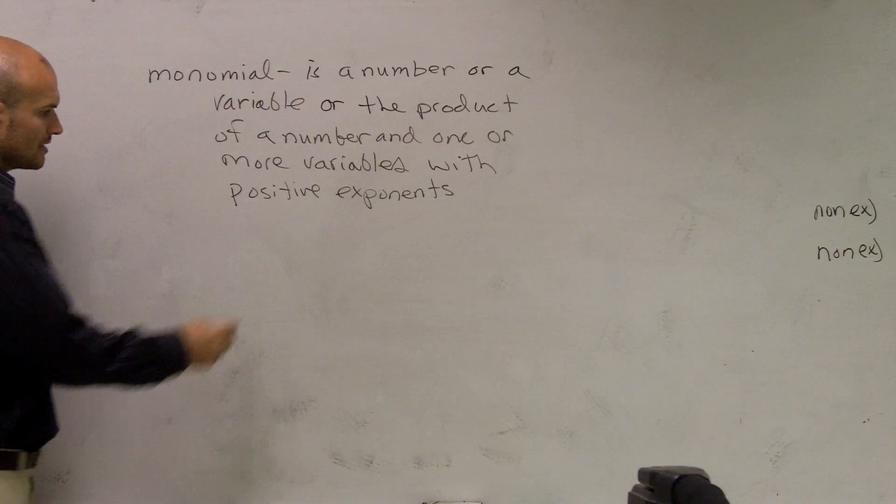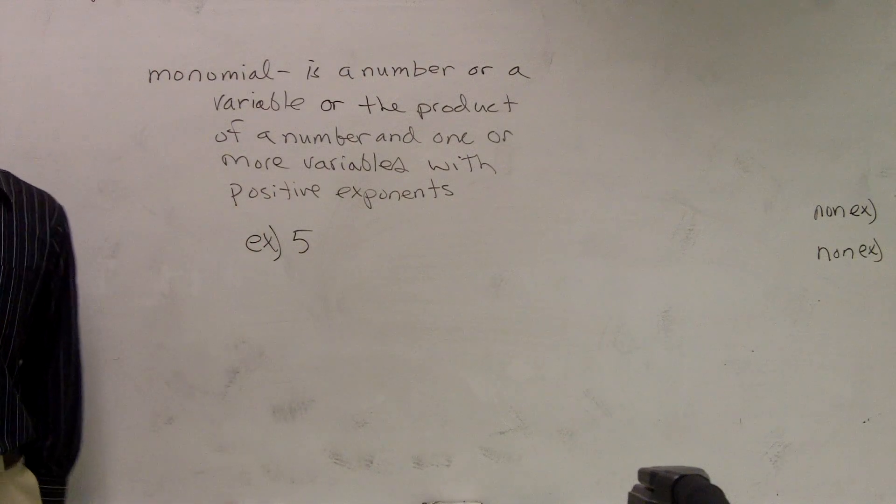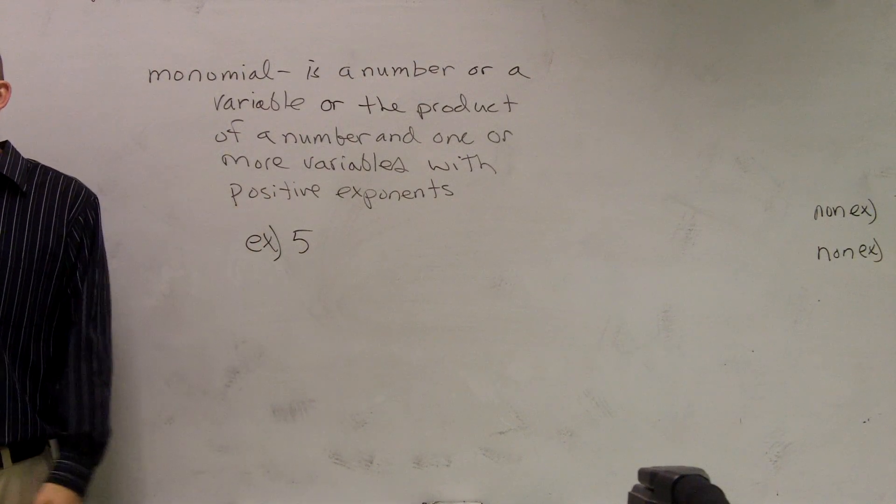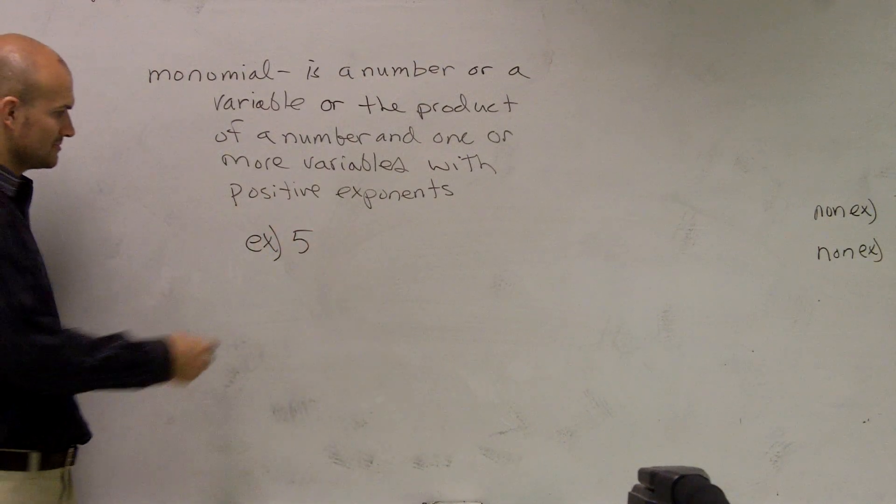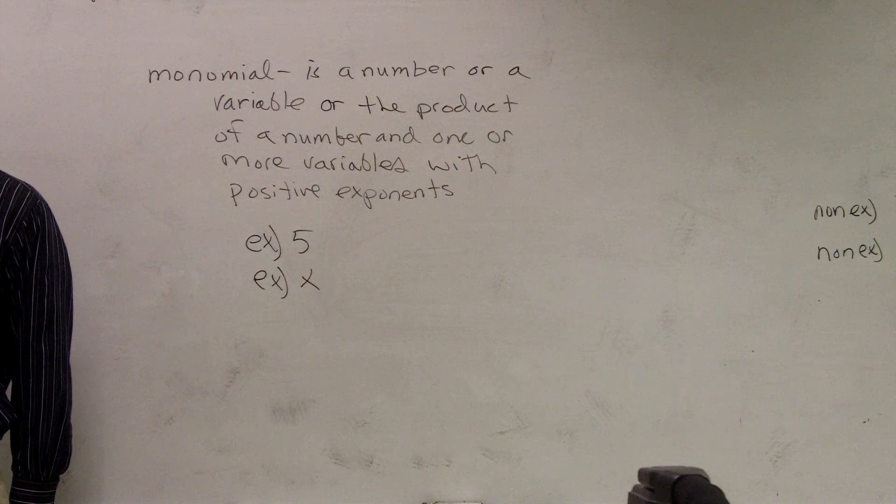So let's look at a couple examples. Five is obviously going to be a monomial. It's just a number. We could also say x. That's also a monomial.